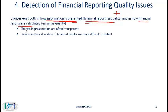How financial results are calculated generally refers to earnings quality. If earnings are high and sustainable, then we say that earnings quality is good. As a high-level remark, choices in presentation are related to financial reporting quality. These choices are transparent, meaning that relatively speaking, it is easy for us to determine whether the information is being presented well or not. On the other hand, choices in the calculation of financial results are more difficult to detect.